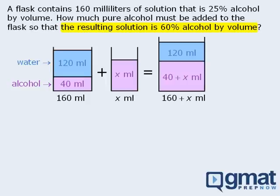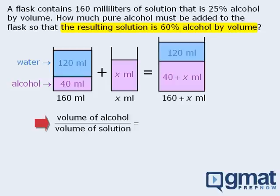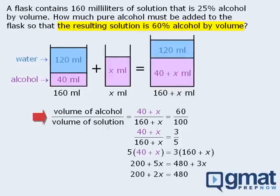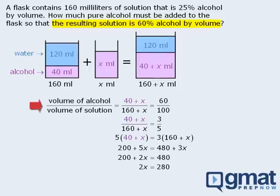The question tells us that we want the new solution to be 60% alcohol by volume, so we want the following fraction to equal 60%, or 60 over 100. From our sketch, we can see that the volume of alcohol in the new mixture is 40 plus x mL, and the total volume of the new mixture is 160 plus x mL. We want this fraction to equal 60%, so we set it equal to 60 over 100. We can simplify the right-hand side to 3 fifths, then cross multiply and expand both sides. Subtracting 3x from both sides, then subtracting 200 from both sides, and dividing both sides by 2 gives x equals 140. So we must add 140 mL of pure alcohol to the original solution to get a new solution that is 60% alcohol by volume.